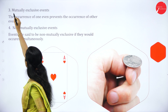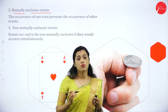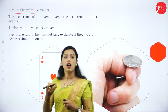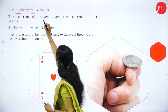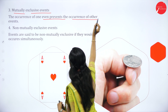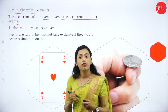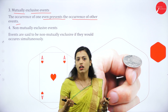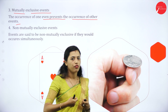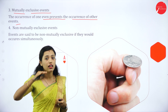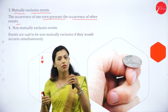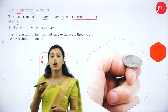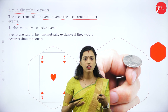Next thing is mutually exclusive events. The occurrence of one event prevents the occurrence of another event. For example, if we toss a coin, we will get either head or tail — both cannot come simultaneously. So if head comes, head prevents the tail. If tail comes, tail prevents the head. Mutually exclusive event means occurrence of one event prevents the occurrence of another event.